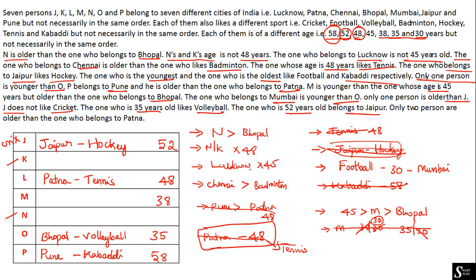N is older than the Bhopal person who is 35 years, so N's age must be more than 35. Ages already placed are 38 (M), 48 (L), 52 (J), 58 (P) and 35 (O). The remaining unplaced age is 45, so N must be 45 years. That leaves 30 years for K. The 30-year-old belongs to Mumbai, so Mumbai is placed for K. K likes football.